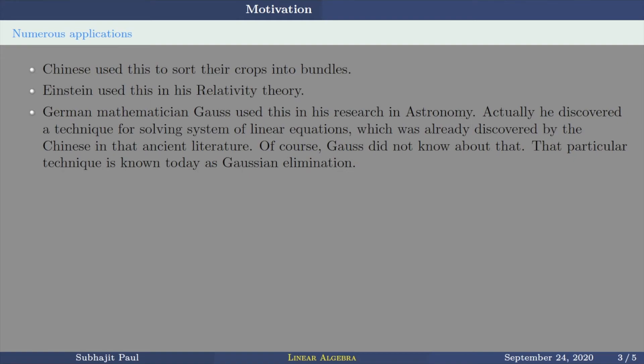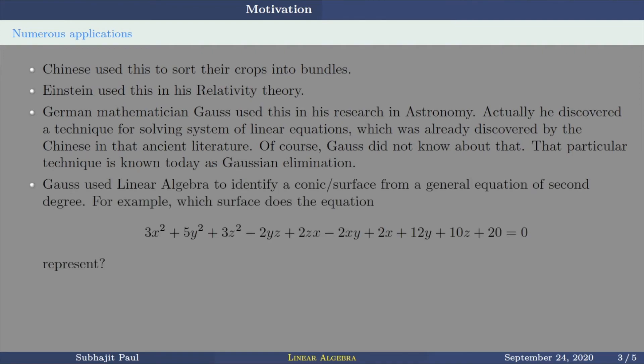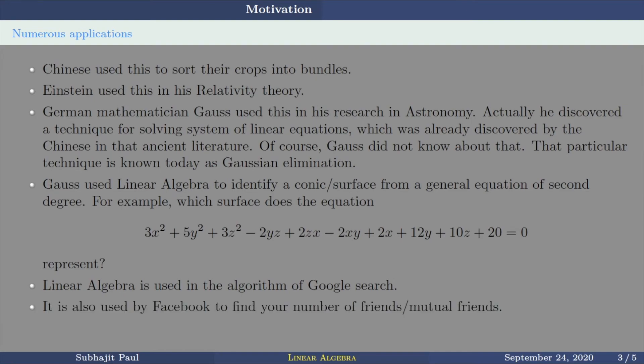Gauss also used linear algebra to identify a conic section or a surface from a given general equation of second degree. For example, which surface does this equation represent? Is it a cone? Is it an ellipsoid? Is it a paraboloid? Hyperboloid? Sphere? Plane? What is this? So Gauss used linear algebra, used techniques to identify conic or surface from a general equation of second degree. Linear algebra is used in algorithm of Google search. Linear algebra is used by Facebook to find your number of friends or mutual friends. We will see this thing later. How Facebook does this? Linear algebra is used in engineering of all sorts. So it has got numerous applications.